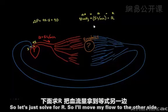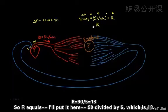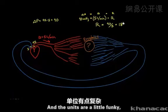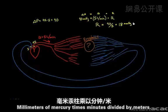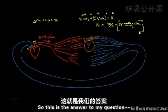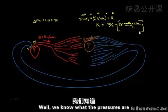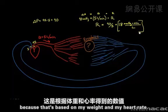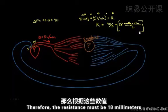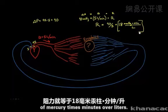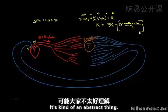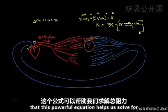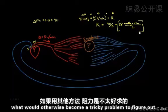Solving for R: R equals 90 divided by 5, which is 18. The units are millimeters of mercury times minutes divided by liters. So the total body resistance is 18 mmHg·min/L. The units are a bit abstract, but this powerful equation lets us solve what would otherwise be a tricky problem — by knowing the pressures at the beginning and end of the system and the flow rate based on body weight and heart rate.